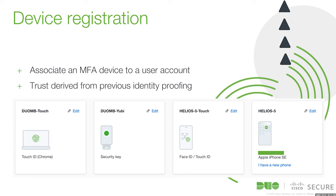Additionally, there can be cases similar to what Becca just talked about, where an adversary tries to prompt or social engineer someone to confirm a push request or something else to confirm their identity, and then they get to register their own device. So there are these multiple different points of human interaction that can lead to the initial compromise.